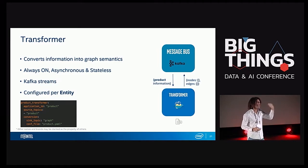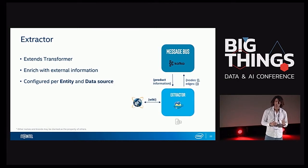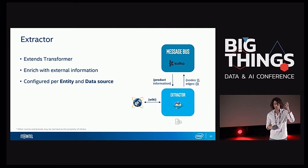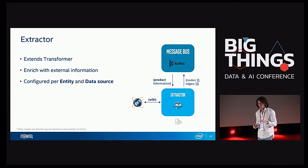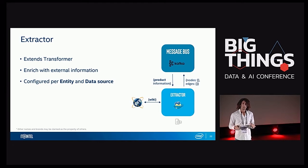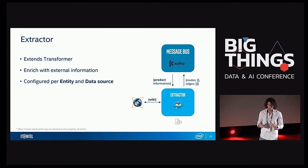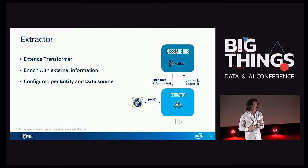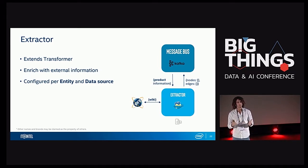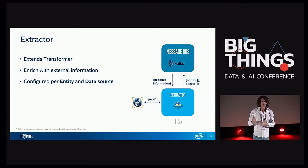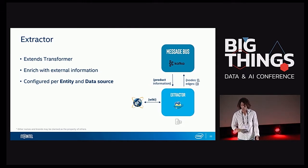We wanted to get external data, so we extended the transformer and created the extractor. The extractor enriches the data with external information — it goes out to the world and gets more information about a specific product. It is configured per entity, like the transformer, and also configured with the data source. Each data source needs its own implementation of a data source interface — it's a kind of plug-in system. If you want to get external data from Wikipedia, you implement how to access Wikipedia and what the processing will be like, because you don't want all the information from that page. You want post-processing, maybe run some simple machine learning models to get reasoning before transforming the external information into nodes and edges and publishing it back to Kafka to be persisted to the graph database.